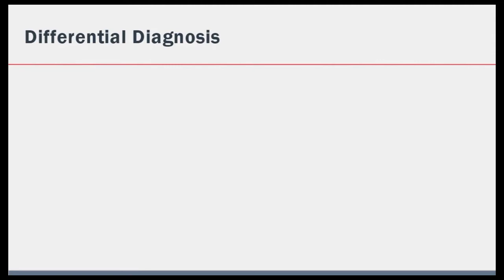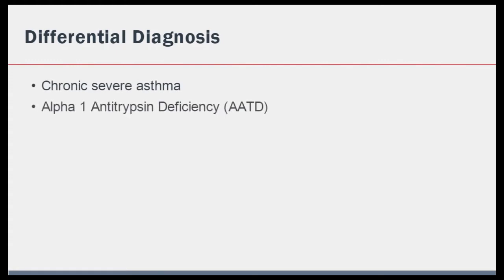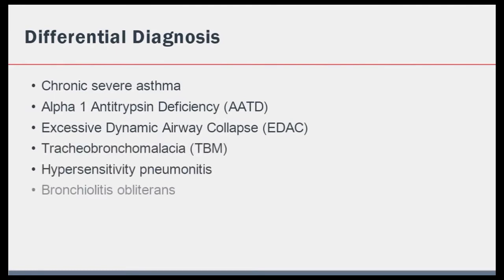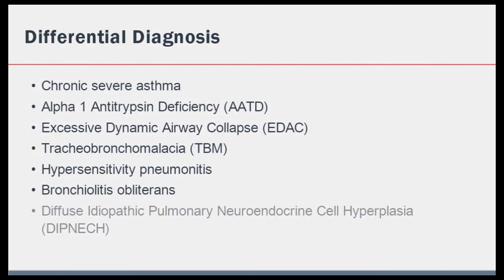At this stage we should consider a differential diagnosis for less commonly considered causes of airflow obstruction. These would include chronic severe asthma, alpha-1 antitrypsin deficiency, excessive dynamic airway collapse, tracheobronchomalacia, hypersensitivity pneumonitis, bronchiolitis obliterans, and diffuse idiopathic pulmonary neuroendocrine cell hyperplasia, or DIPNECH.